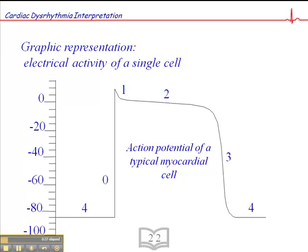So let's first look at what an action potential is. An action potential is a representation of the electrical activity of a single cell. So what they do is they put a probe inside the cell and one outside the cell, and they measure the negativity inside the cell.